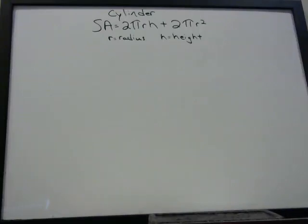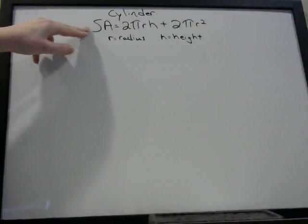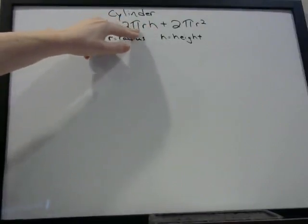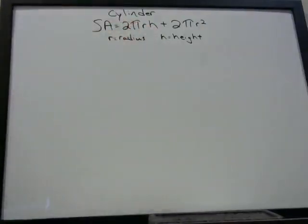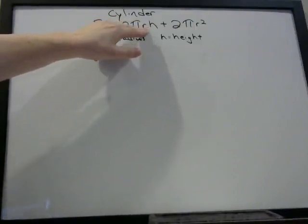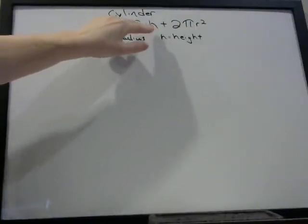Here we're going to talk about finding the surface area of a cylinder. This formula is on the formula sheet, so you don't need to memorize it, but you do need to understand it and how to manipulate it in case you run into a word problem that's not entirely straightforward. The surface area of a cylinder is 2πrh — 2 times pi times radius times height. When they're all written together like this, that means multiplication.